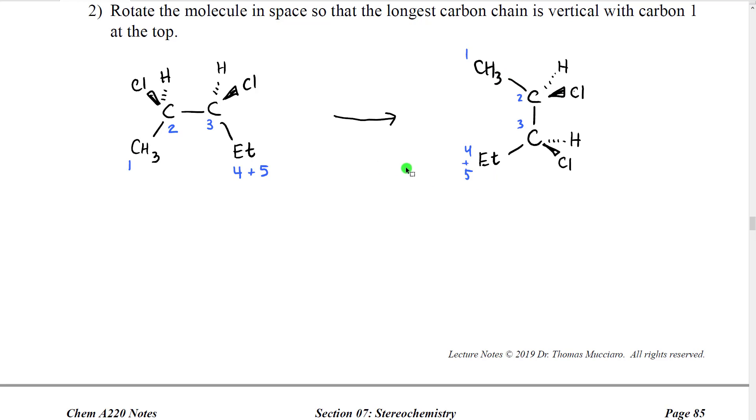Now it is possible to encounter Fischer projections that are technically incorrect where carbon number one is not at the top, it's instead at the bottom or even in rare cases where carbon number one is written left or right. These are technically not correct and we should try always to put carbon number one at the top.